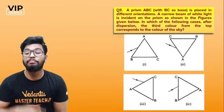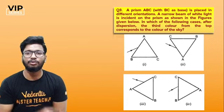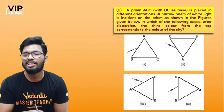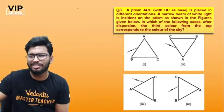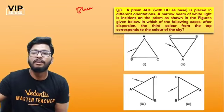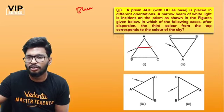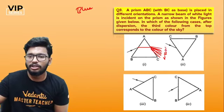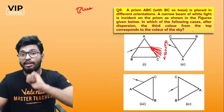Eighth and final question: a prism ABC with BC as base is placed in different orientations. A narrow beam of white light is incident on the prism. In which case does the third color from the top correspond to the color of the sky — which is blue? For the first case, violet is always towards the base, so the order is WEBGIORE — the third color from the top is green, not blue.